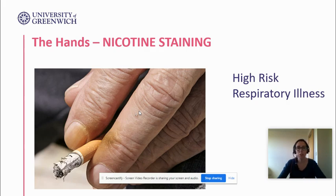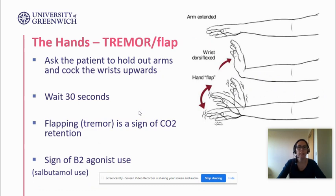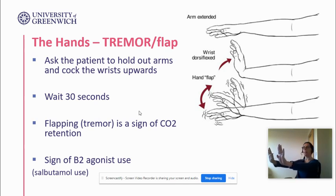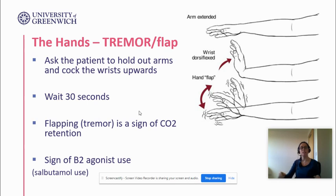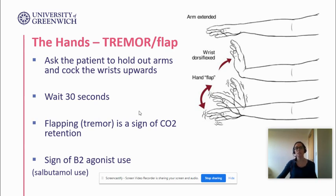Nicotine staining — if we see a yellow tinge on the fingertips, that's highly indicative that the patient smokes and therefore quite probable they'll have some lung condition. Next is the tremor flap: ask the patient to put their hands out in front of them. You might see a slight flap, which can be a sign of beta-2 agonist use — have they just taken a puff on their inhaler? But it can also be a sign of CO2 retention, so look out for the tremor flap.